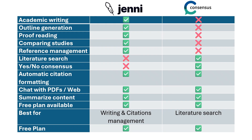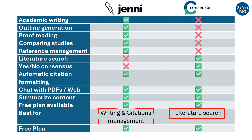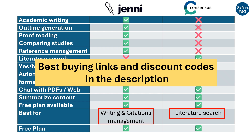This table shows a side-by-side comparison of key features of Jenny and Consensus. If your primary goal is to gather and summarize literature and get science-backed answers, you can opt for Consensus. But if you are struggling to write a manuscript, proofread, cite papers, and manage references, you should go for Jenny. A better approach would be to use them together, as they complement each other — connecting both ends of research from finding the literature to producing refined academic documents. Both offer free plans to try, and if you wish to upgrade, links and discount codes are in the description.